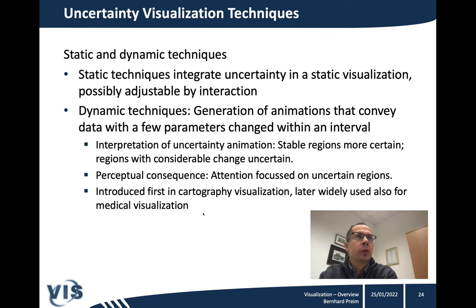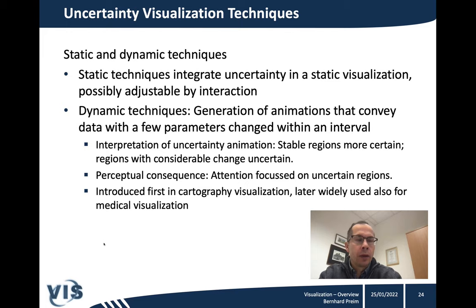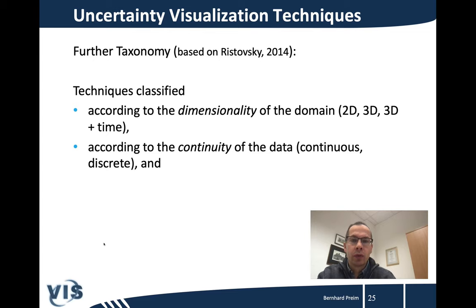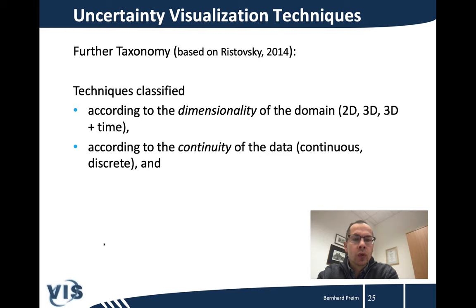I will briefly show one example of dynamic techniques. An animation is generated that conveys how the visualization would change if one parameter is slightly adapted, giving a feeling for the sensitivity with respect to a parameter. Finally, we said in the taxonomy — which I borrowed from a paper by Ristowski and colleagues — that there are different dimensionalities, and also that we may have different levels of uncertainty: a discrete situation, or continuous uncertainty values.